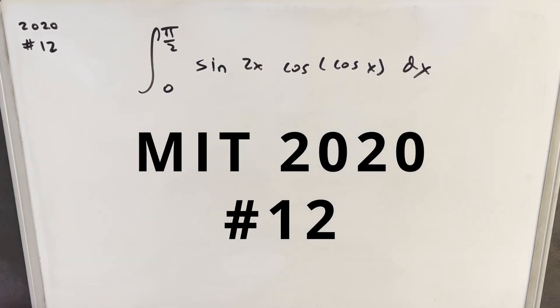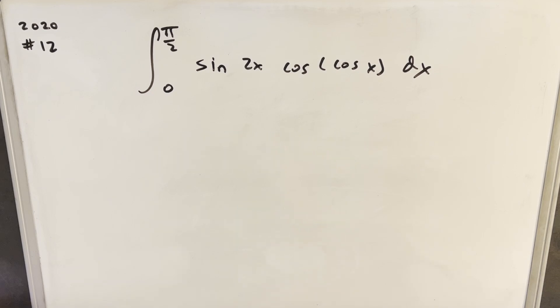Hey, we have here on the board today another integral. This one's from MIT integration B 2020, problem number 12. I have the integral of 0 to pi over 2 sine 2x cosine of cosine x dx. Okay, let's get right into the problem.